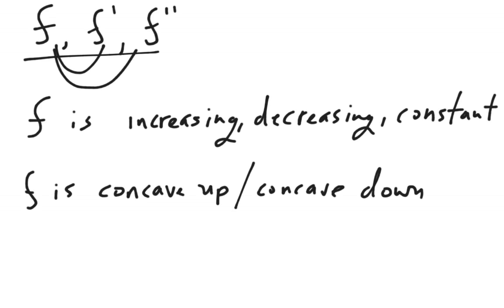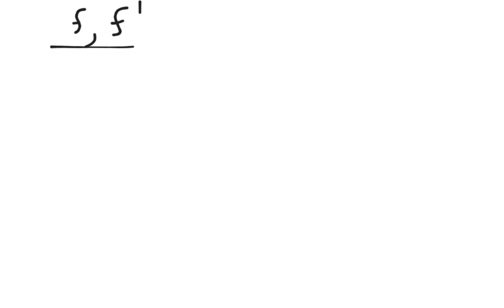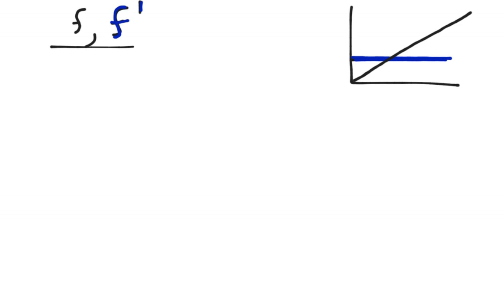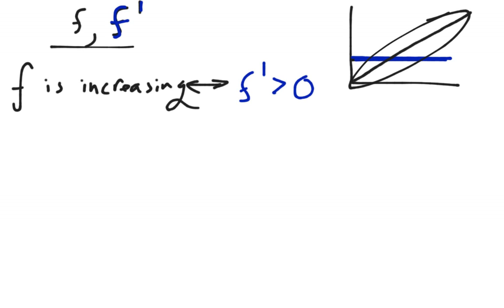We'll also talk about a special kind of point called an inflection point. First, we're going to talk about the relationship between f and f prime. If f prime is positive in a region, then f is going to have a positive slope at all those points — f is always increasing. So if f is increasing, that means f prime is bigger than zero, and vice versa. If f prime is bigger than zero, that means f is increasing. The two are essentially interchangeable.